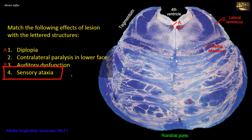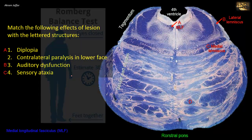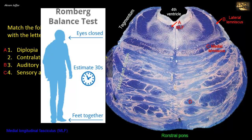Sensory ataxia is particularly pronounced when the patient's eyes are closed, preventing visual compensation. Patients have great difficulty walking unless they watch their limbs. If they try to stand erect with eyes closed and feet together, they sway and may fall if not supported. This is clinically called Romberg's sign.